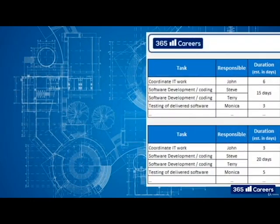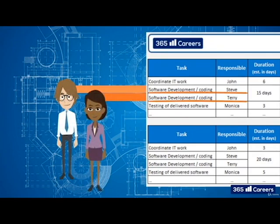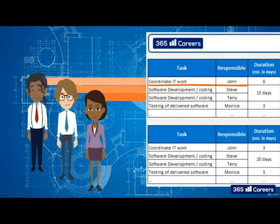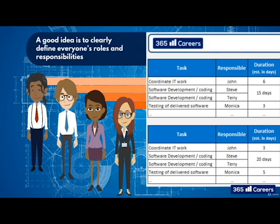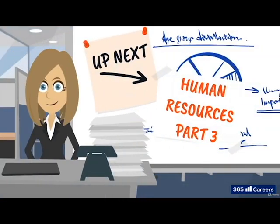After we've filled in the details, we can see in this workstream there are two developers, Steve and Terry. John is responsible for the whole IT delivery and will be managing and coordinating their work. Monika has been appointed to do software testing, and every few days she will need to test the created software and provide feedback. This shouldn't be a problem to manage with this schedule, but it's not the most high-level way of organising it, especially with large numbers of employees. A good idea is to clearly define everyone's roles and responsibilities — so that's what we'll do in the next lesson.